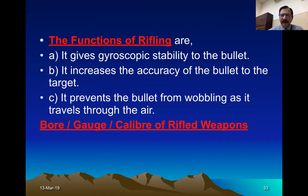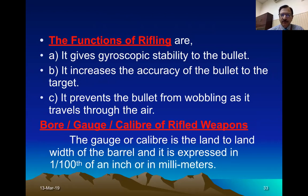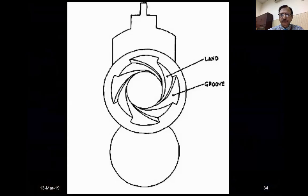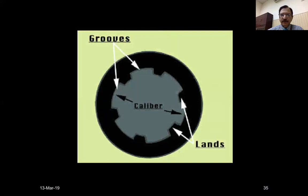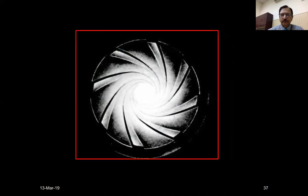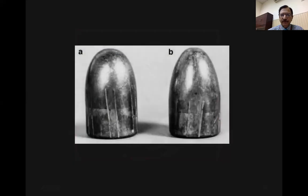Regarding the bore, gauge, or caliber of a rifled weapon, the caliber is measured by the distance between two opposite lands — it is the width of the barrel between two opposite lands, expressed in hundredths of an inch or in millimeters. When viewed from the muzzle end or through the breech opening, these spiral grooves appear — the raised portions are called lands and the depressed portions are called grooves.